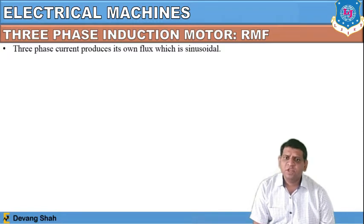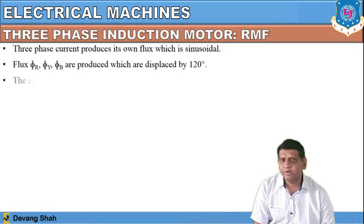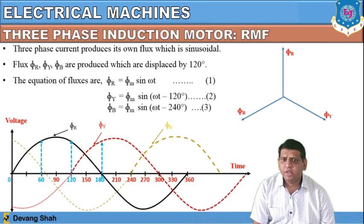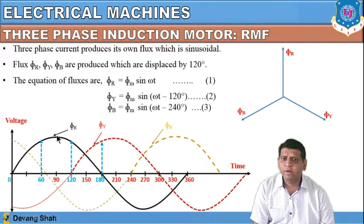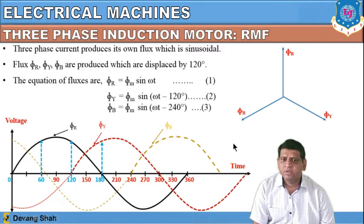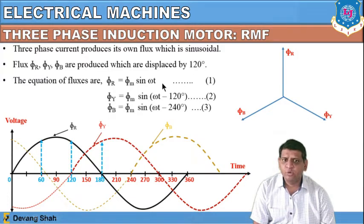All three phase currents produce their own sinusoidal flux, which can be represented as: φR = φM·sin(ωt), then after 120 degrees there is production of φY, and after 240 degrees there is production of φB. In terms of waveform, these mathematical equations represent the production of magnetic flux in the three-phase induction motor. All fluxes are produced at different angles — one at zero, another at −120°, and the third at −240°.